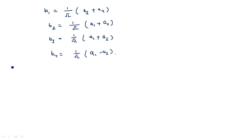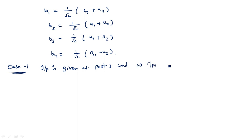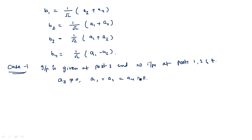Case 1: Input is given at Port 3 and no inputs at Ports 1, 2, and 4. We can write this as: a3 is a non-zero existing value, whereas a1, a2, and a4 are zero, because there is no incident wave at those ports.